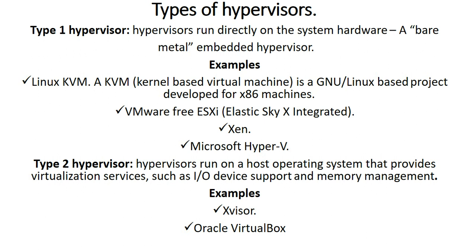Type 2 hypervisors run on top of an existing operating system. So what we are saying is: I bought my physical server — maybe it's a PowerEdge or whatever type of server — and in that physical hardware computer I don't run the hypervisor first. Instead, I install an operating system first, for example Linux, Windows, or Mac OS.